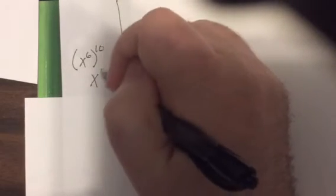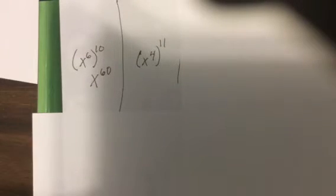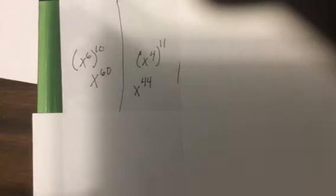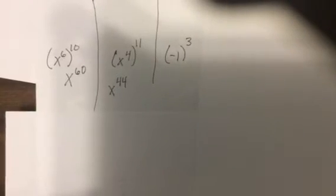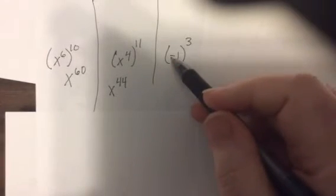What's X to the sixtieth? Well guess what the answer is? That's right, X to the sixtieth. When you raise to power, take a base raised to a power, then raise the whole thing to another power, you multiply. So what's X to the fourth to the eleventh? That's right, X to the forty-fourth.